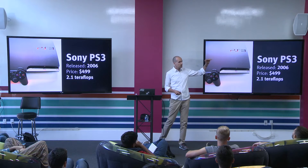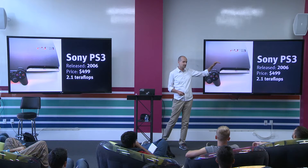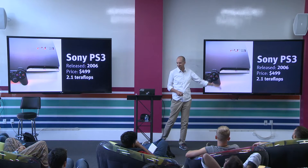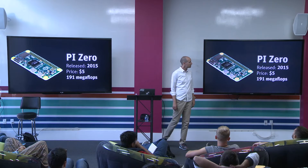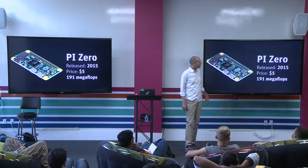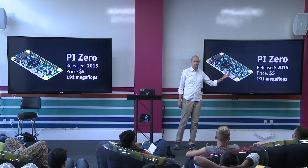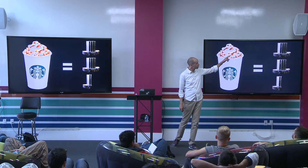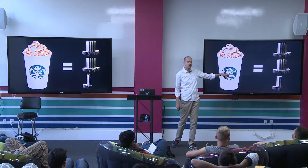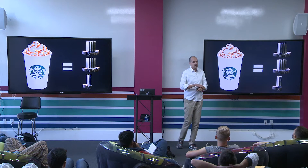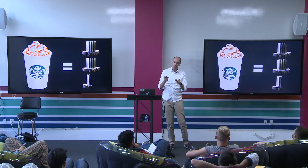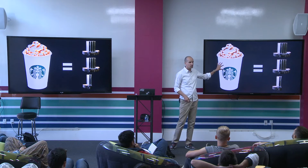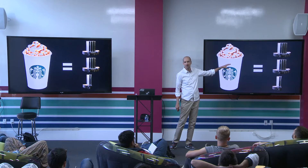You go from something used to calculate atomic weapons testing to something you can buy at Best Buy within nine years. The Raspberry Pi Zero, which came out about a year ago for five bucks, delivers 191 megaflops — a full-scale computer. For the price of a Venti Starbucks latte, you get the compute power of two and a half Cray-1 supercomputers. Each of those Cray-1s had more compute power than all of NASA combined had to put a man on the moon. So now for literally the price of a cup of coffee, you get two and a half times the compute power NASA had to put a man on the moon.